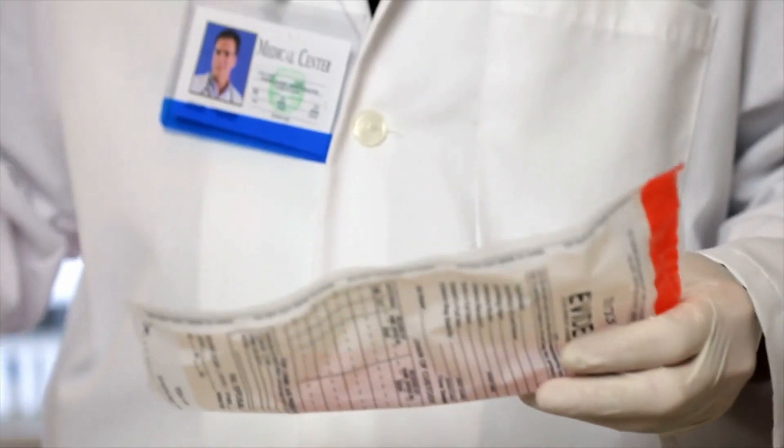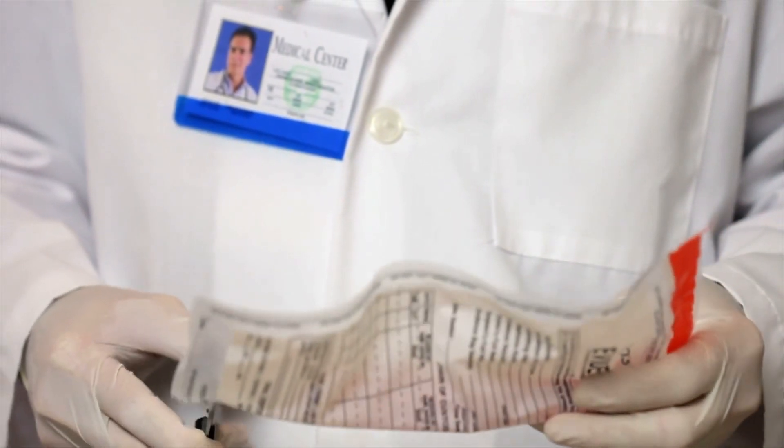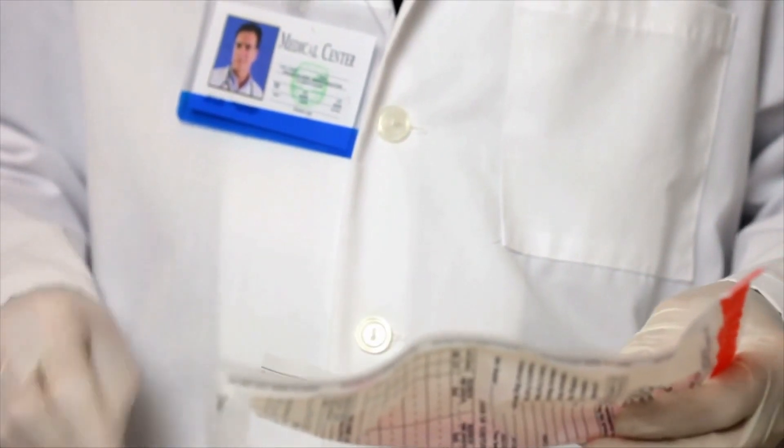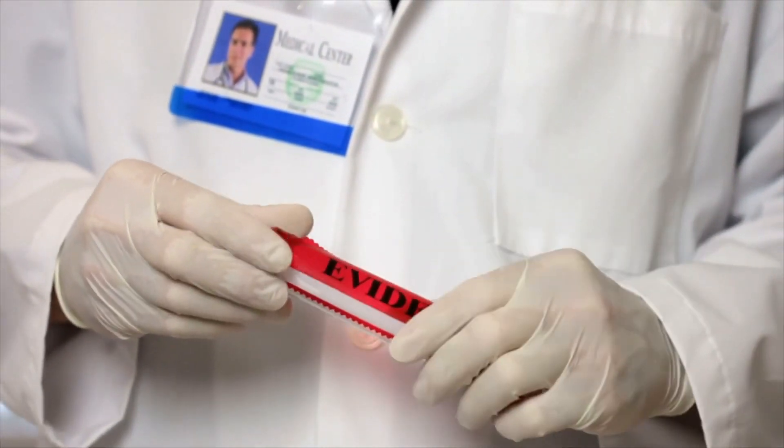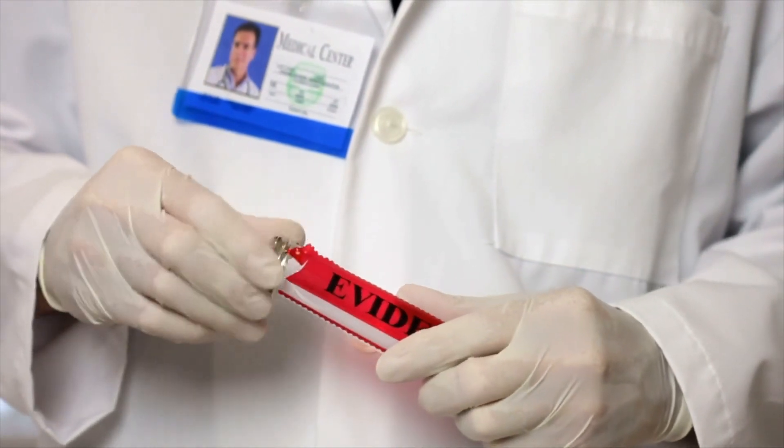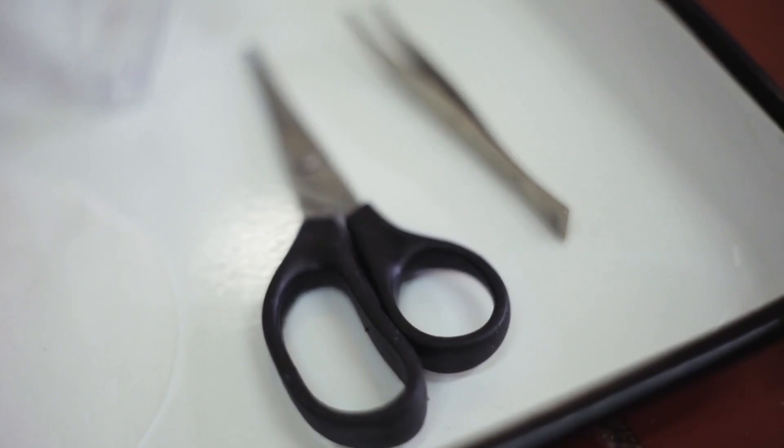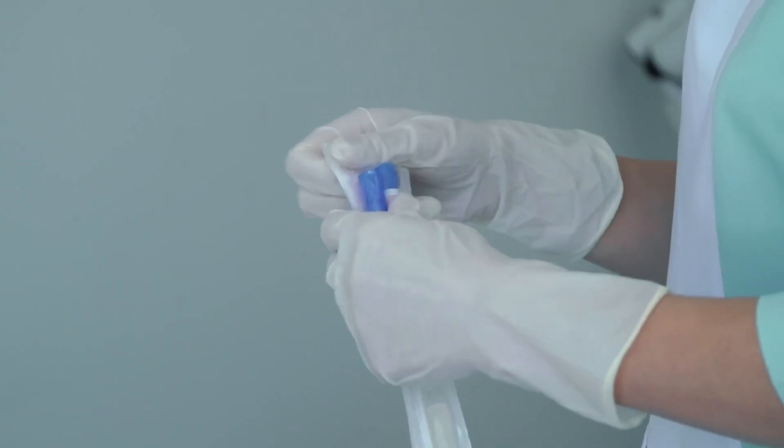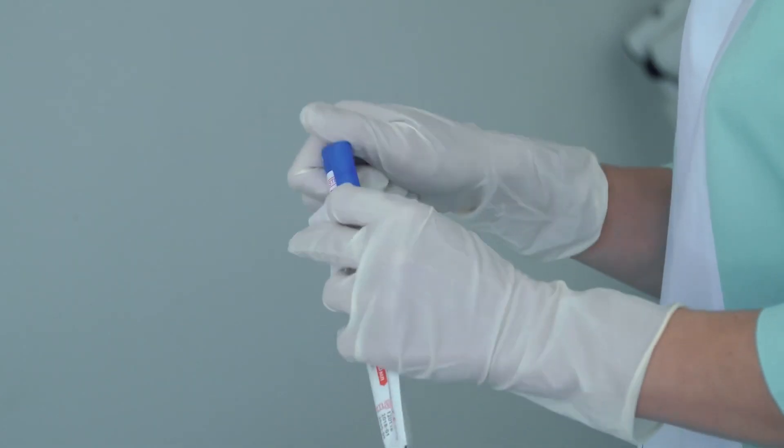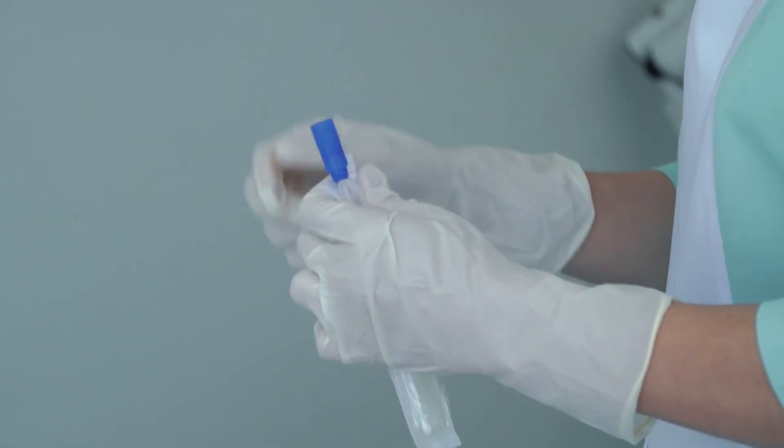The ink sampling process typically involves the following steps. One: Collection. Ink samples can be collected from various sources, such as the questioned document itself, known reference documents, or other potential sources of ink. The collection method depends on the nature of the document and the type of ink used. Common collection methods include swabbing, scraping, or cutting out small sections of the ink.